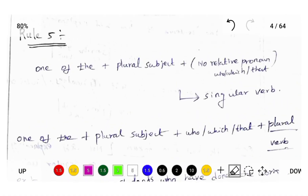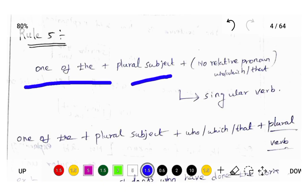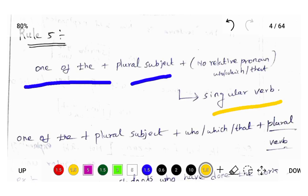Rule number 5 is: 'one of the' followed by a plural subject, then the verb should be in singular form. One of the followed by plural subject, then the verb is singular verb.